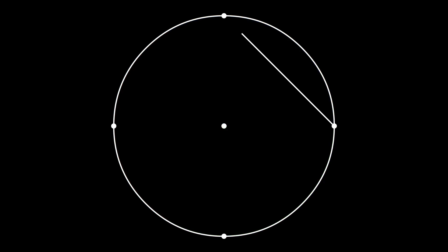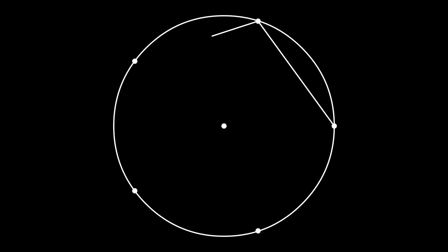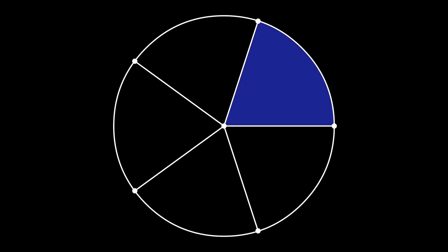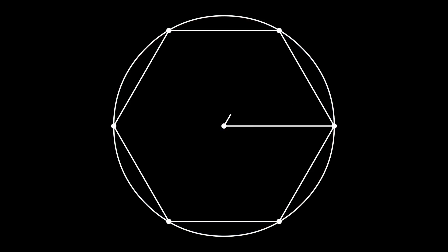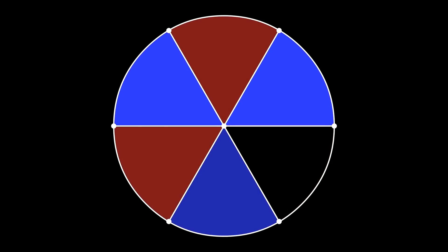Proceeding in a similar manner, we can construct the regular square on the boundary of the circle, dividing the circle into four pieces of equal area. And then we can do the same thing with the regular pentagon and the regular hexagon, dividing the circle into five pieces of equal area and six pieces of equal area, respectively.